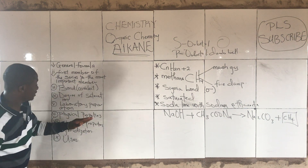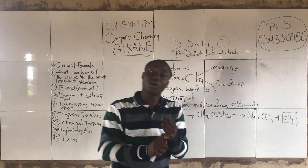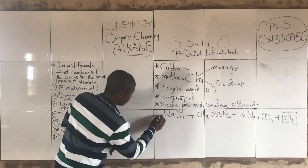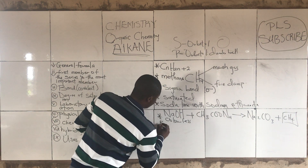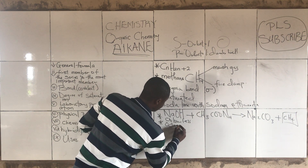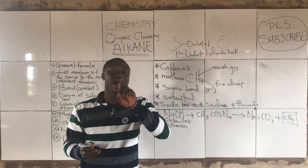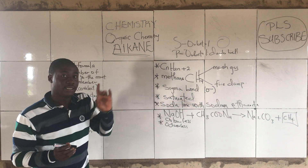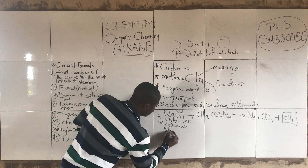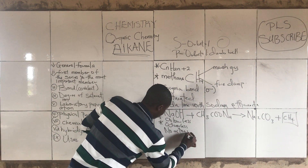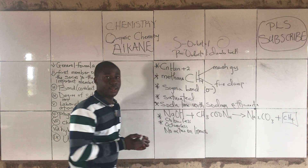Talking about the physical properties of methane or alkanes generally: they are colorless, they are odorless, and they give no action on litmus.